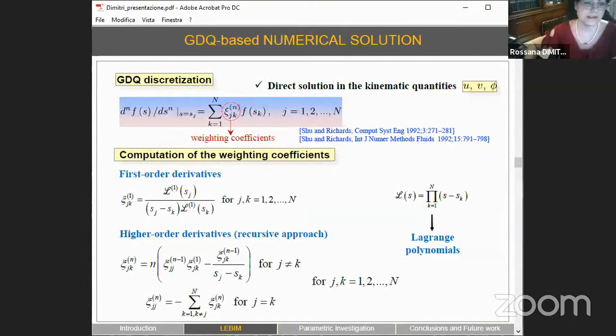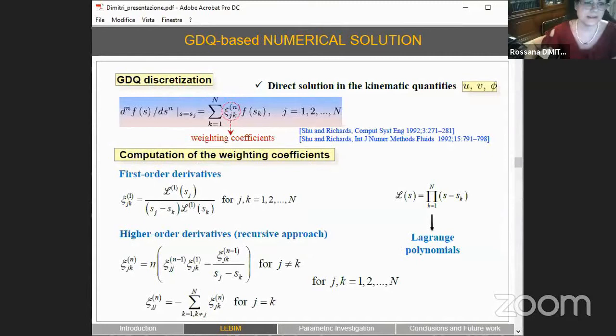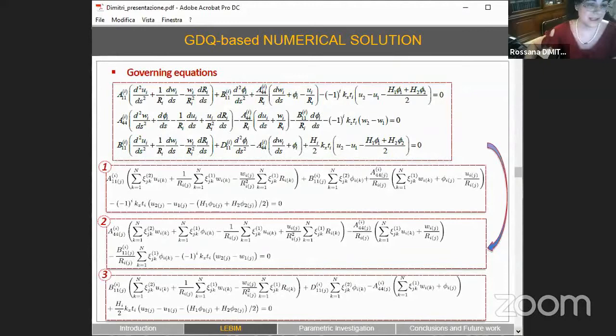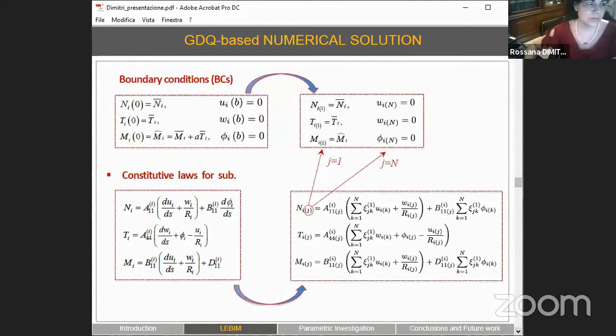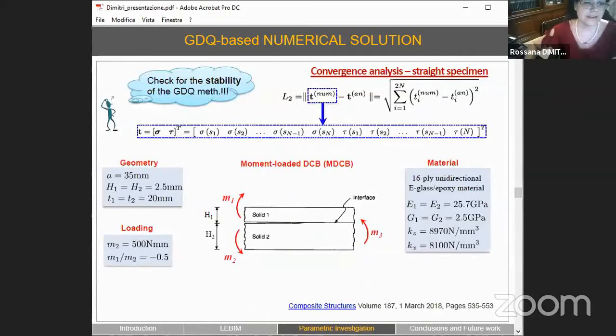As far as the numerical solution is concerned, the fundamental system of equations together with the boundary conditions can be easily solved in a discrete form by applying the GDQ technique, which discretizes the nth-order derivative of a function as a weighted linear sum of the functional values at some fixed collocation points by means of the weighting coefficients as determined through the recursive formula from the literature. Here are the discretized governing equations of the problem together with the discretized formula for the boundary condition and the constitutive laws.